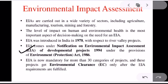There are more than 30 categories of projects. Some examples include nuclear power plants and related projects, thermal power plants, mining projects, ports, harbors, airports, tarred roads in Himalayas and forest areas, and primary metallurgical industries, etc. For these types of projects, EIA is mandatory.